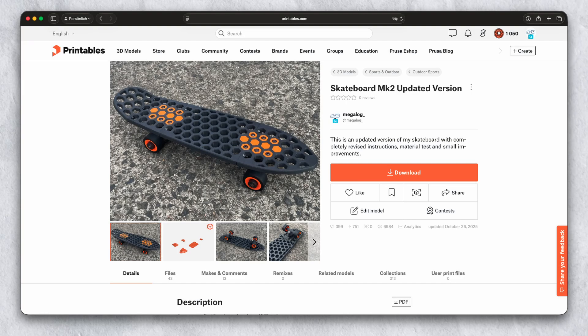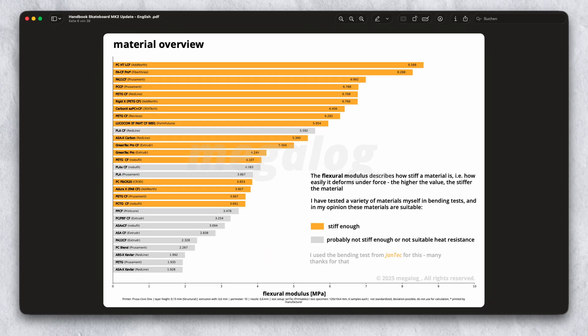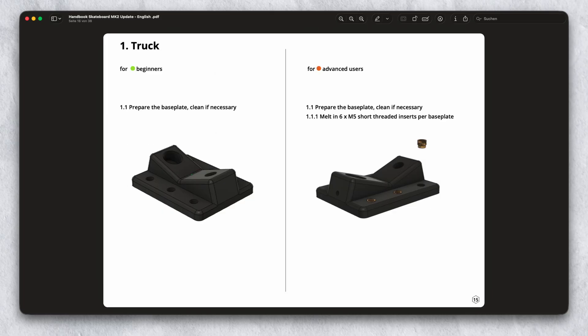If you would like to make your own skateboard, you can find all the files and a detailed step-by-step instructions on Printables. The guide also includes all test results and everything you need to print and assemble your own board. You will find a link in the video description.